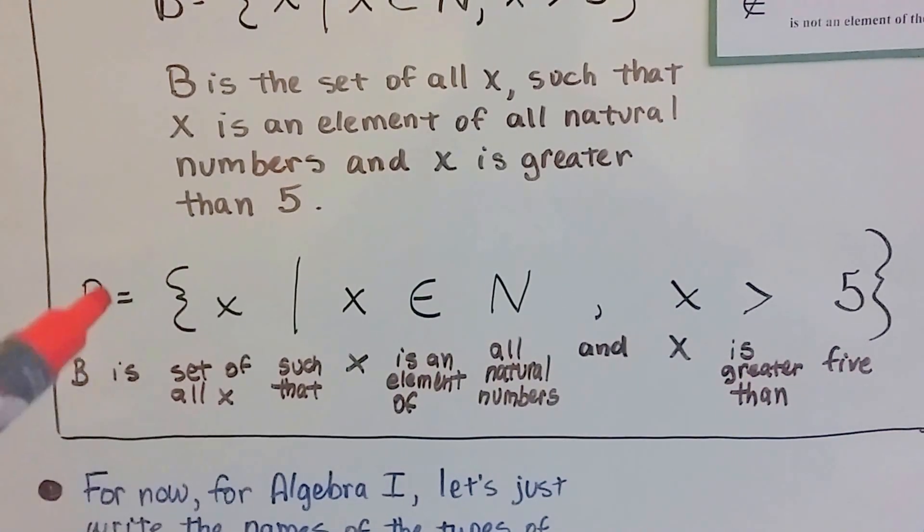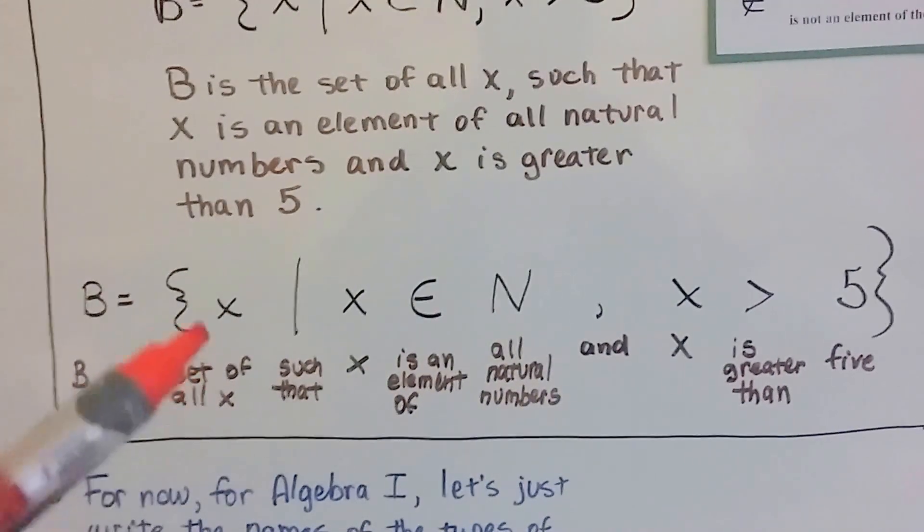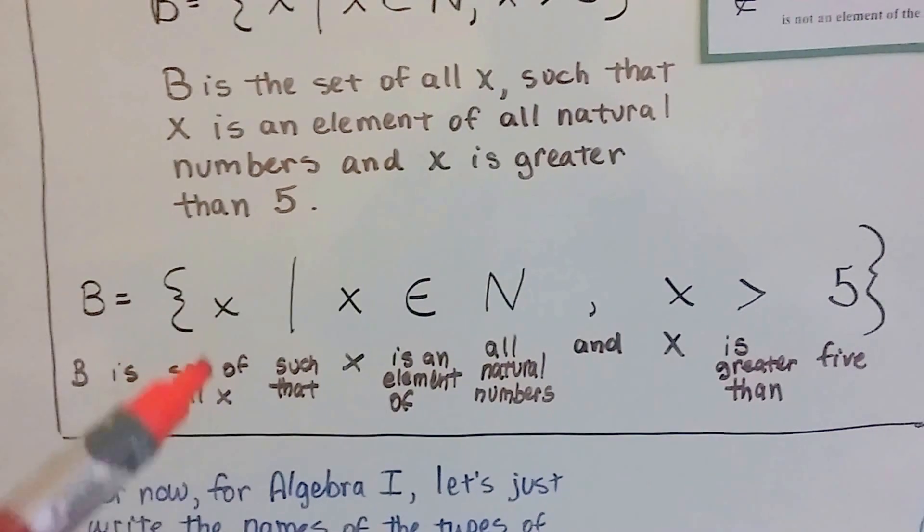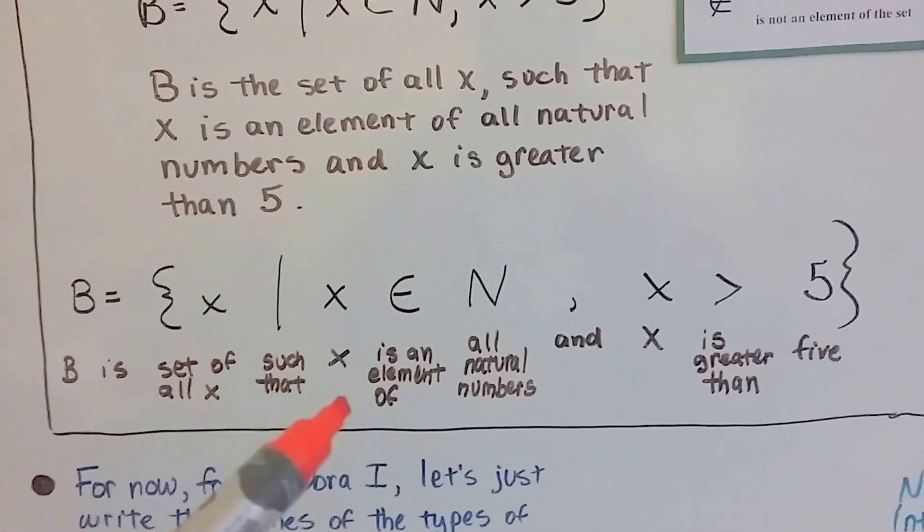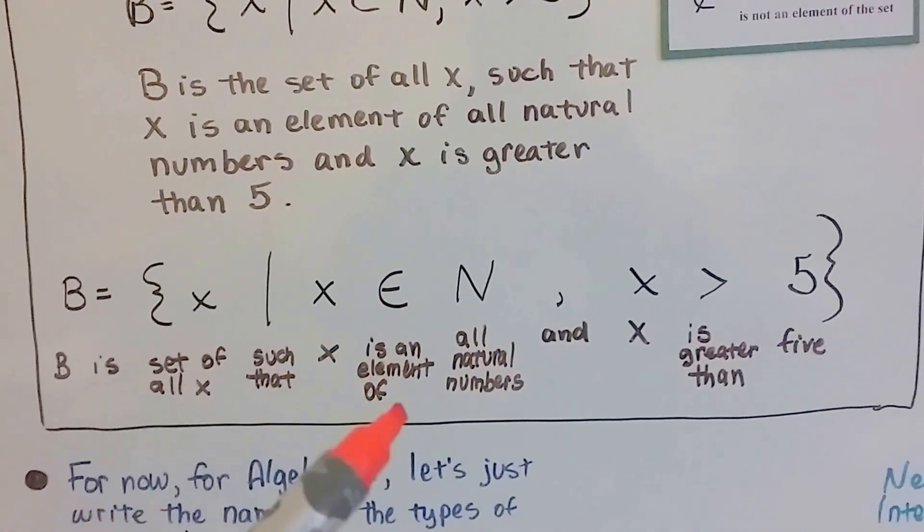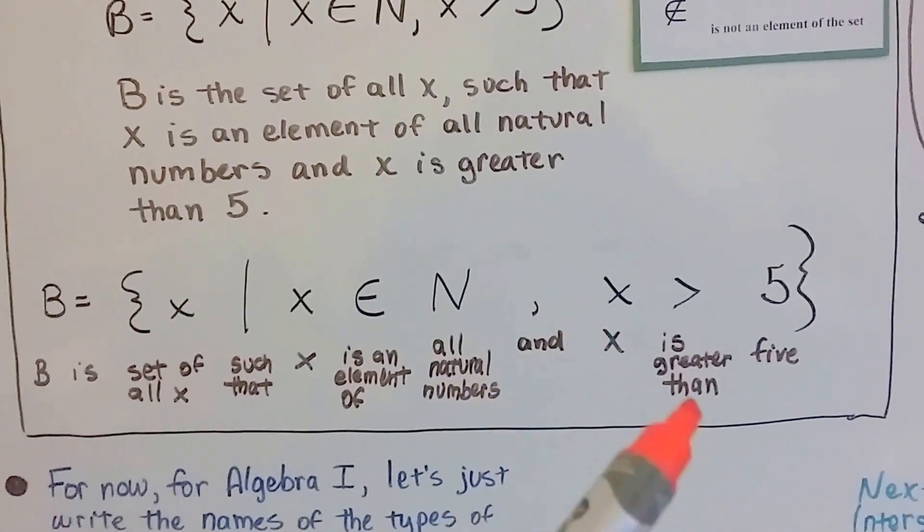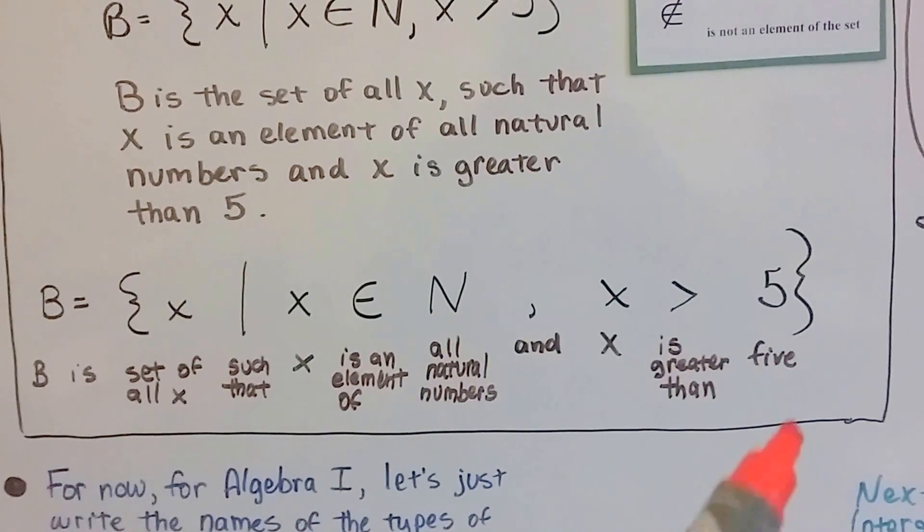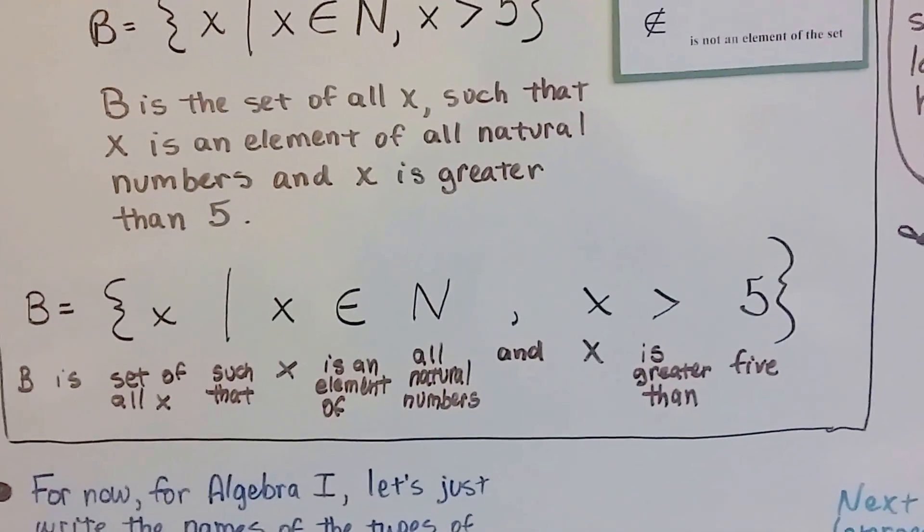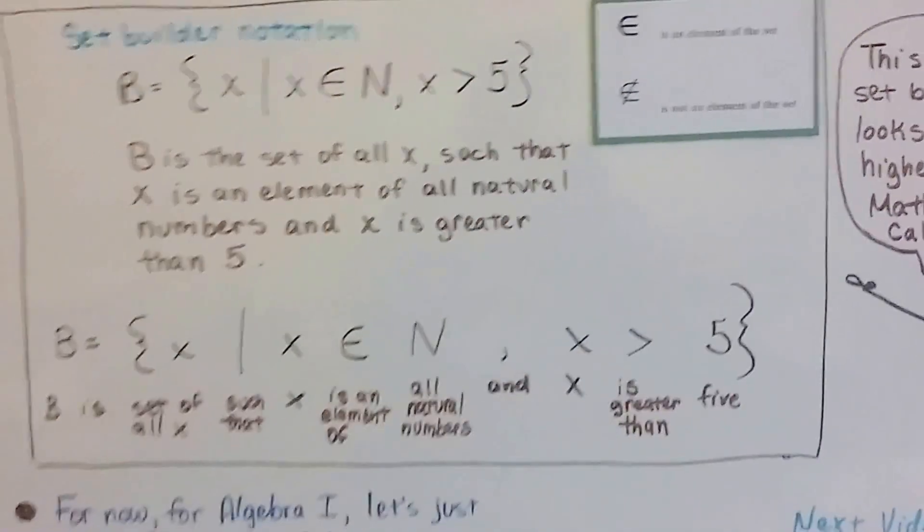B, and then the equal sign is is, and then this is the set of all x. The bar is such that x is an element of all natural numbers, the comma means and, x is greater than 5. And then we close our set braces. See? You're going to be doing that when you get a little bit older.